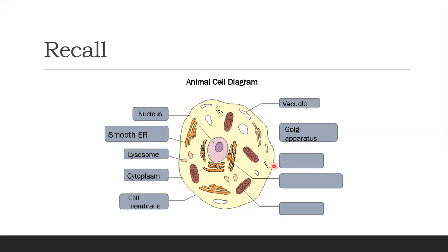These small spherical components are your ribosomes. The function of ribosomes is to produce protein. After protein is produced by ribosomes, the Golgi apparatus will take up the protein, package it, process it, and then transport it out of the cell. So they are both connected.